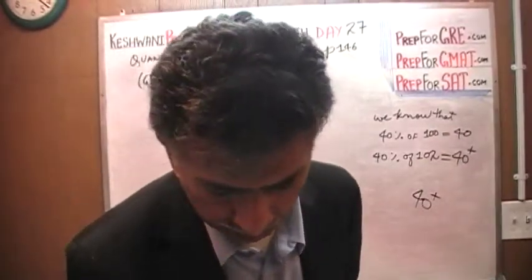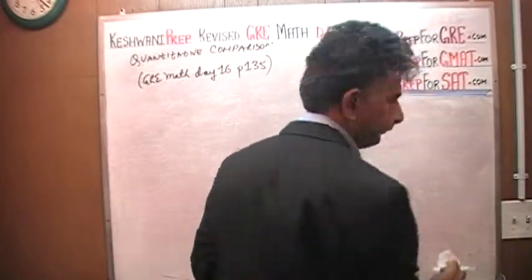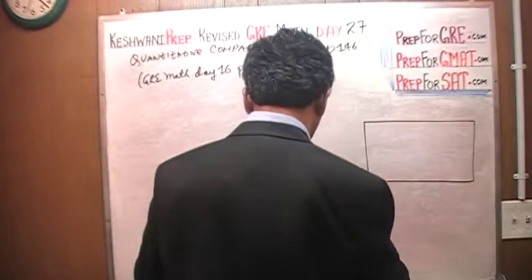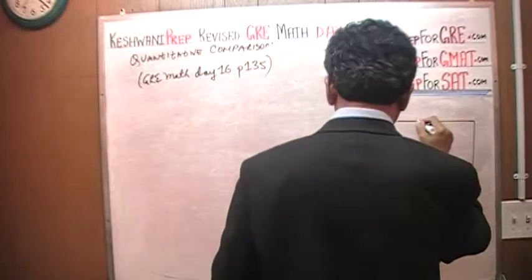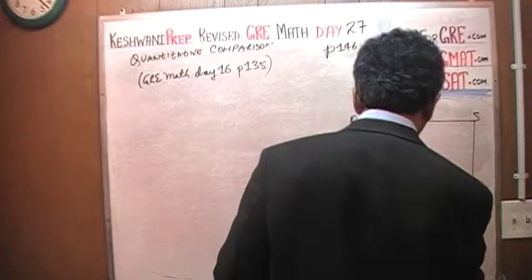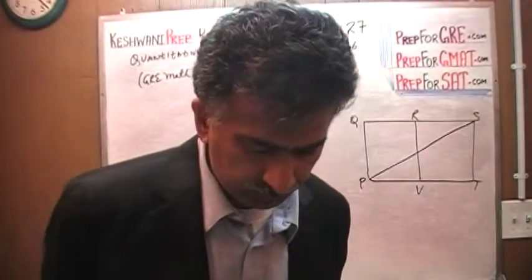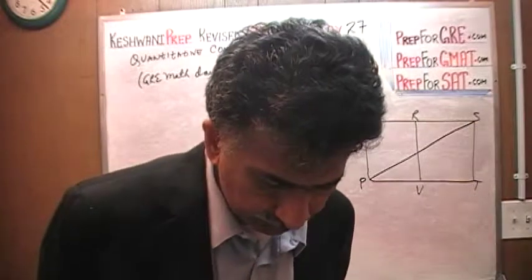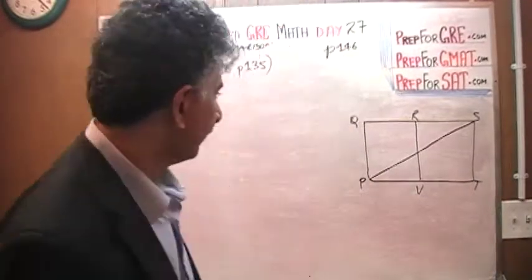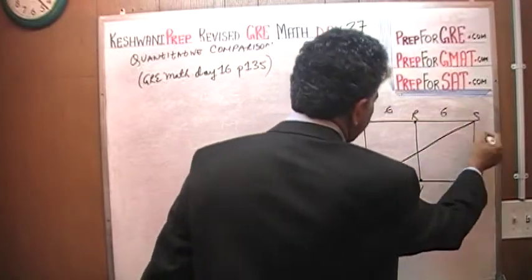Take a look at this next question at the very top of page 146. We are given a picture with points P, Q, R, S, T, and V. We are asked to find the area of the shaded region. The problem states that squares PQRV and VRST each have a side length of 6. So we have two squares, each with side length 6, and we need to figure out the area of the shaded region.